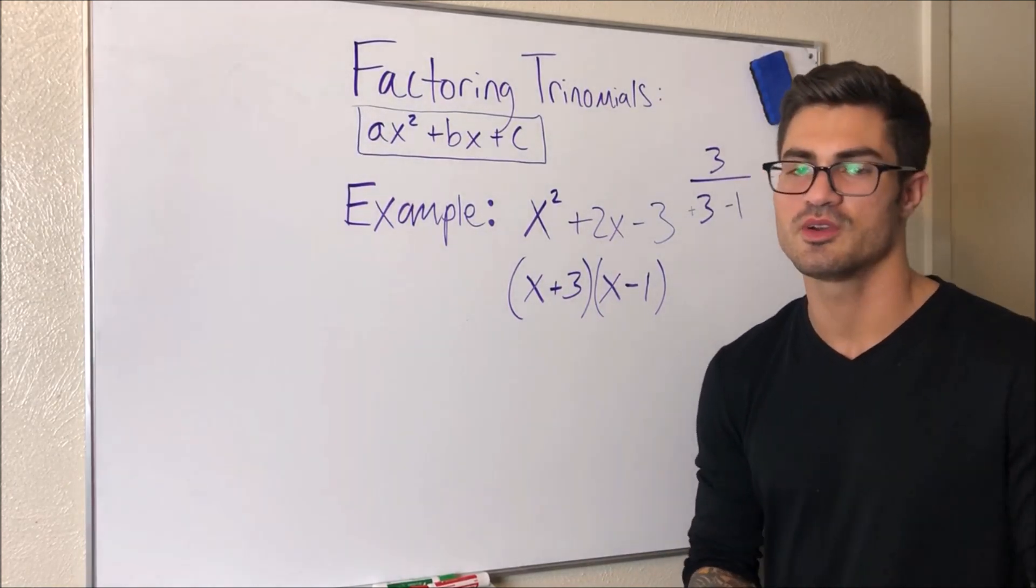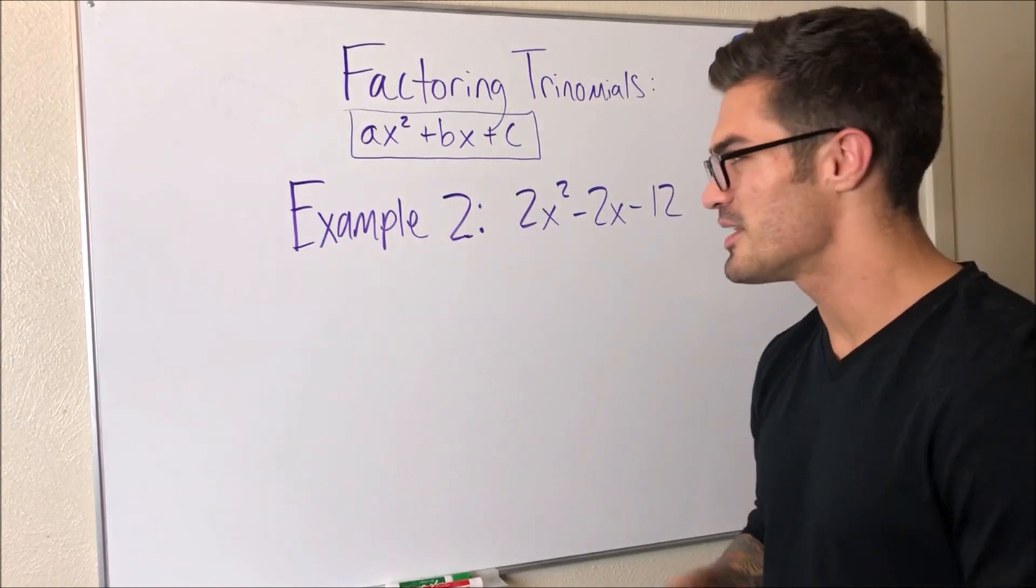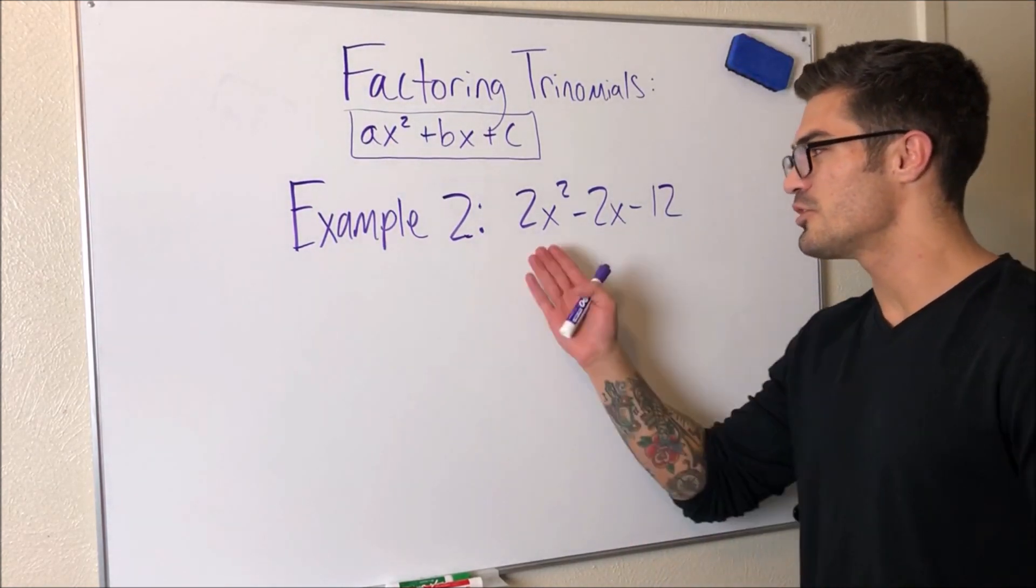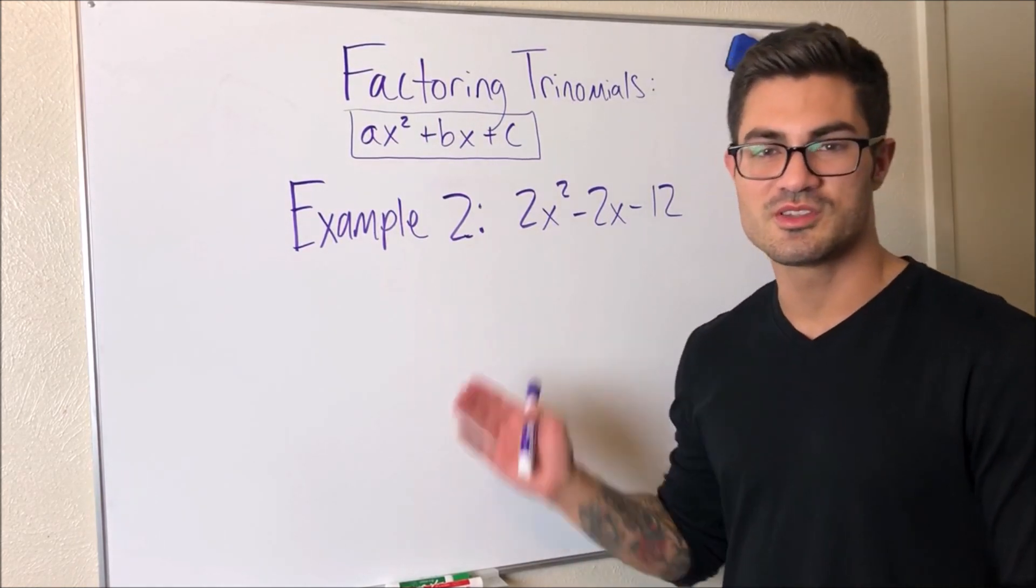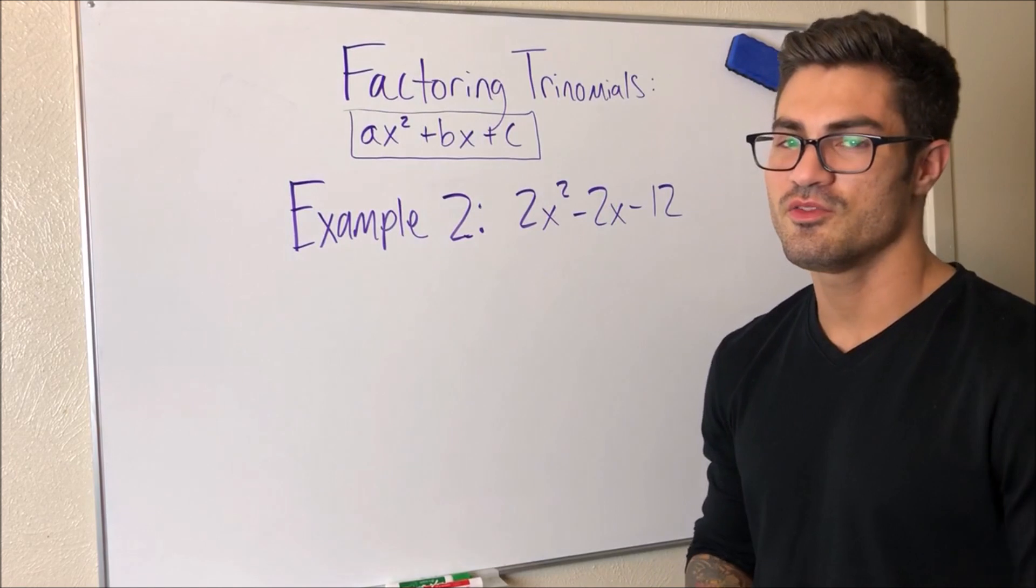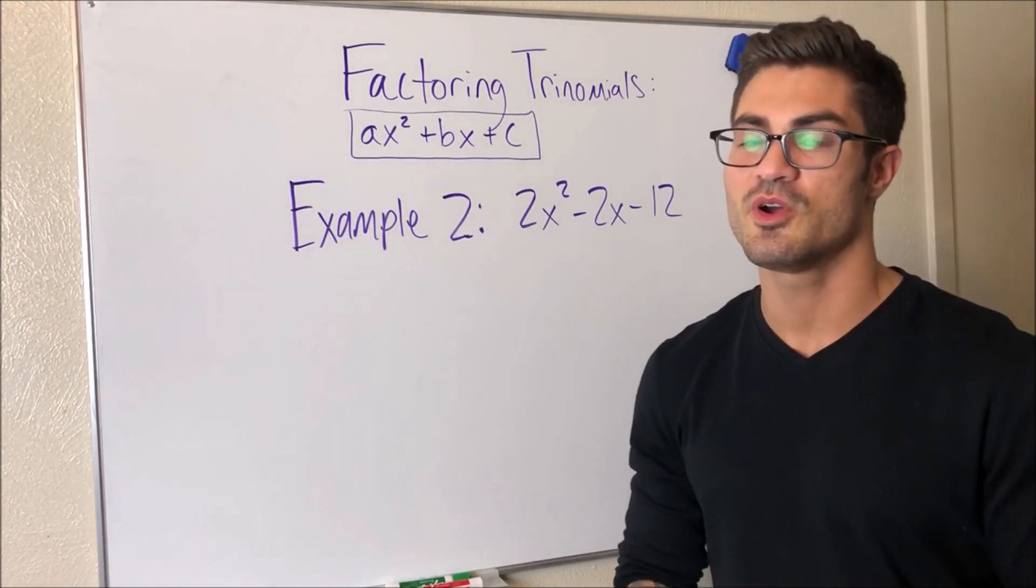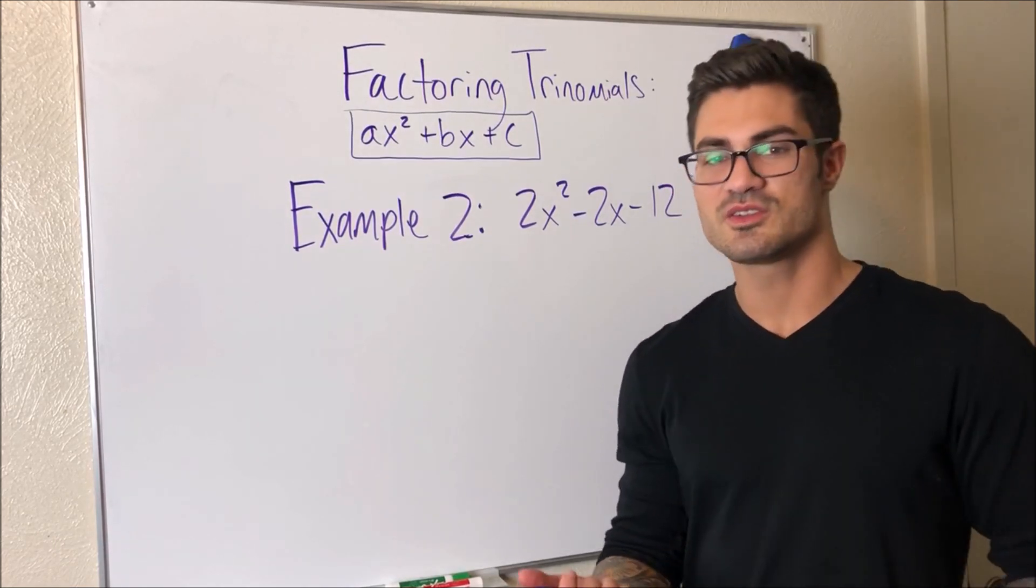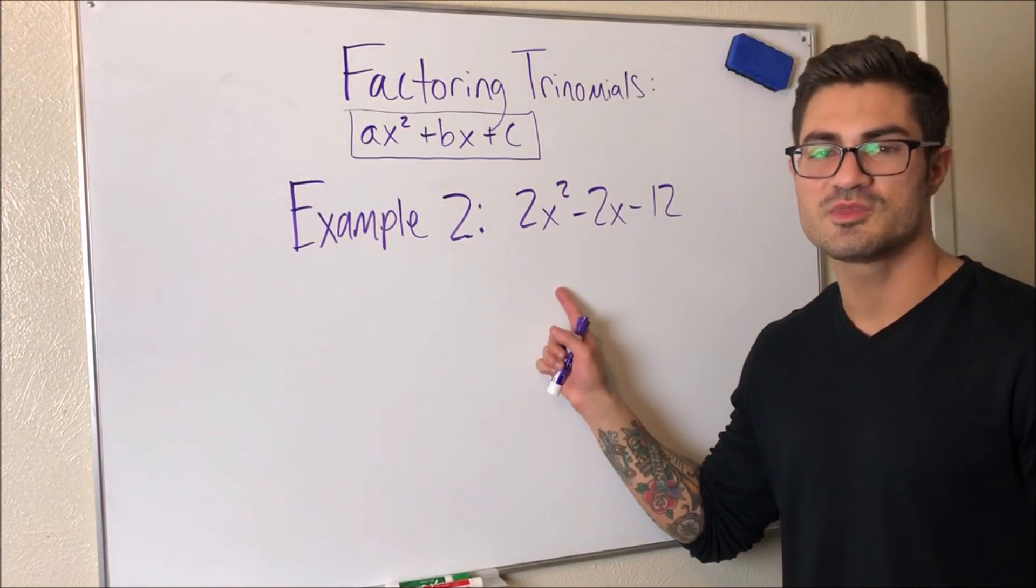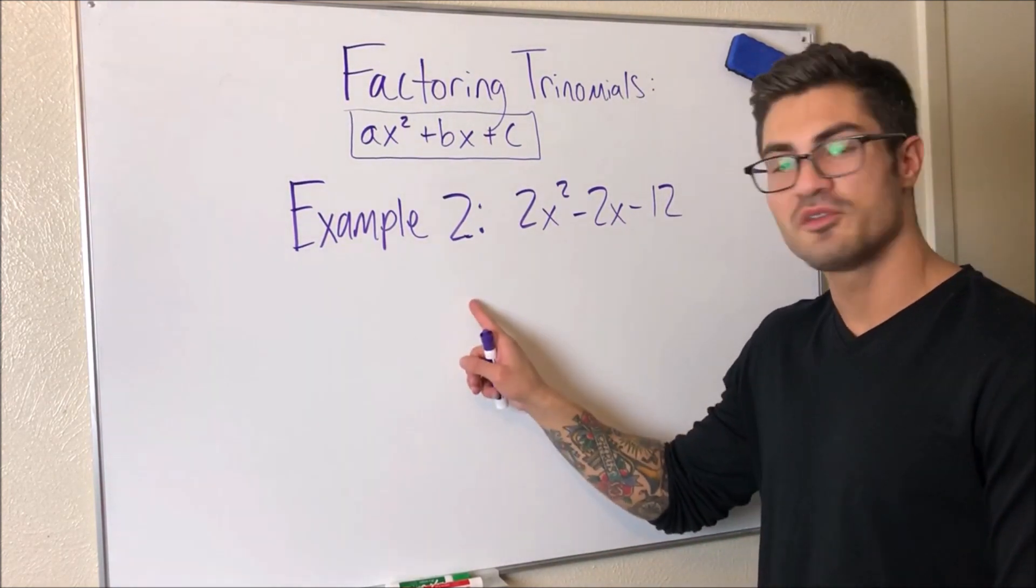So let's go ahead and do one more example. Alright, here's our second example. So in this case, we're asked to factor this trinomial, but as you can see with this trinomial, a is not equal to one. So it's not that case one, we actually have that case two. And if you remember from the beginning of the video, the first thing we always do is look to see if there's a common factor. We look for a greatest common factor between these three terms, and what we're looking to do is factor that out, pull that out in front.